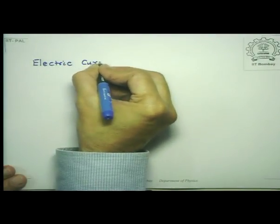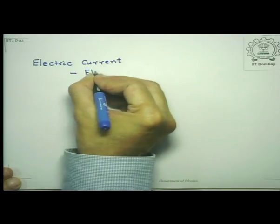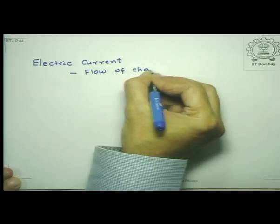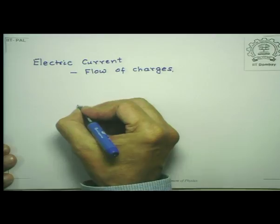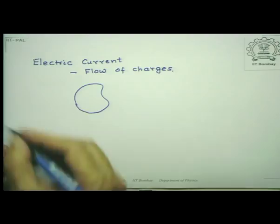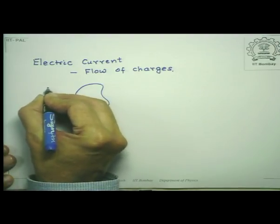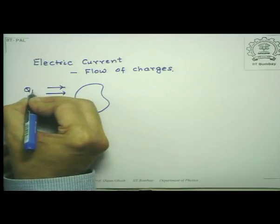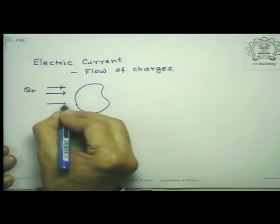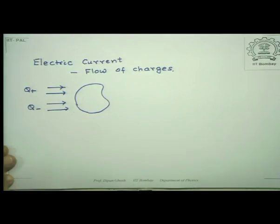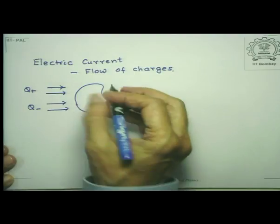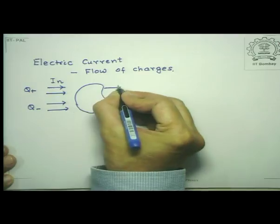Very loosely speaking, electric current is nothing but the flow of charges. Now let me say that I have an arbitrary surface of some area — it doesn't matter what it is. Suppose I have charges: positive charges q-plus and negative charges q-minus, and they are passing through this surface. Whatever enters into that surface comes out, so the charge coming in also comes out on the other side.